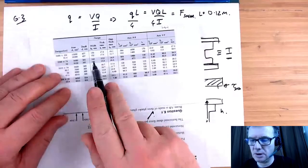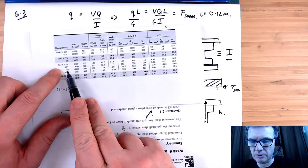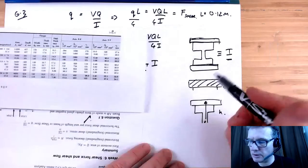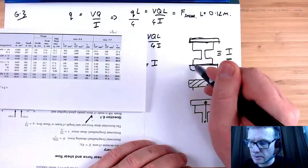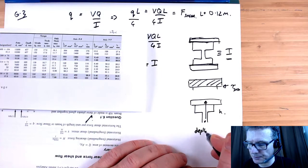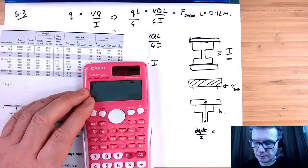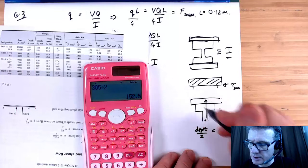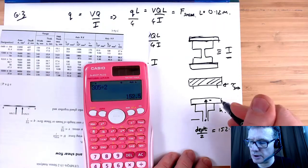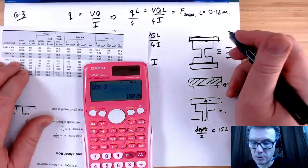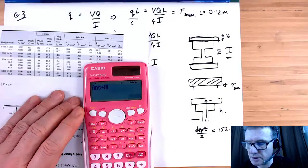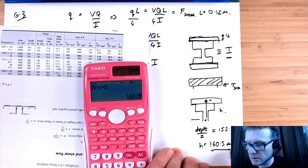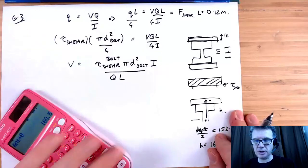From the table of I-beams, we find S310x52 has a depth of 305 millimeters. Half the depth is 152.5 mm. Adding half the plate thickness (8 mm) gives us h = 160.5 millimeters to the centroid of the top plate, which is also the ȳ value for Q.